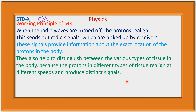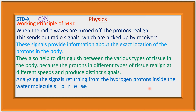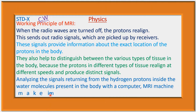By analyzing the signals returning from the hydrogen protons inside the water molecules present in the body, an MRI machine — with a computer — makes images of the internal organs. The signals from the protons are received by the receiver, and analyzing these signals with a computer, the MRI machine creates images of the internal organs.